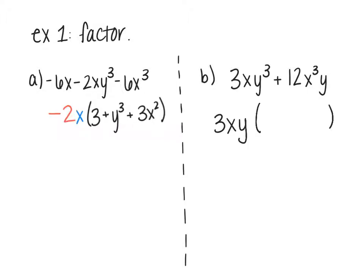So now I'm ready to write the stuff inside. So 3xy³, I took out 3x and y, so I'm just left with 2 y's. 12x³y, I took out 3, so I'm left with 4x², and then I took the y out and I took one of the other x's out. So there, that is your answer.